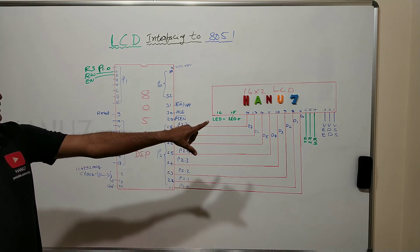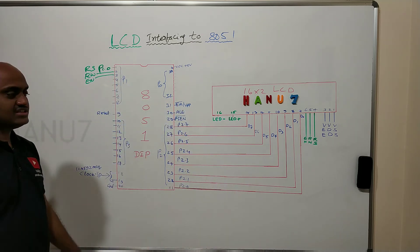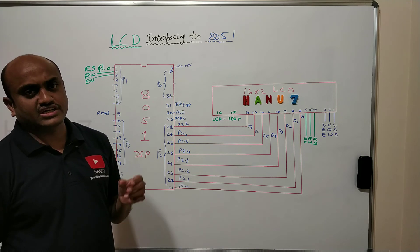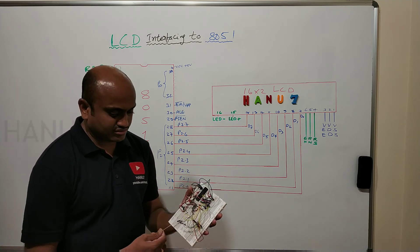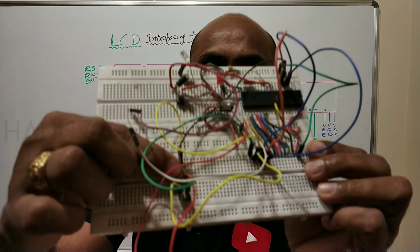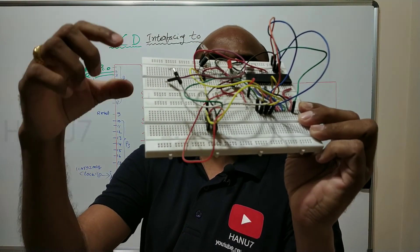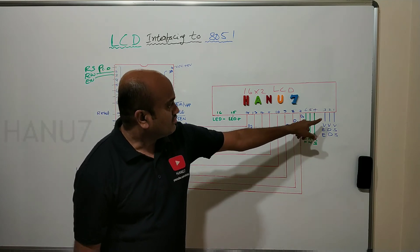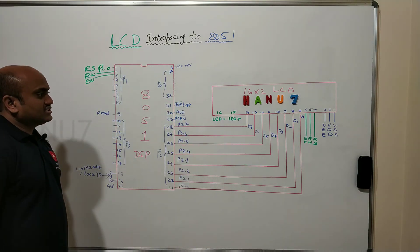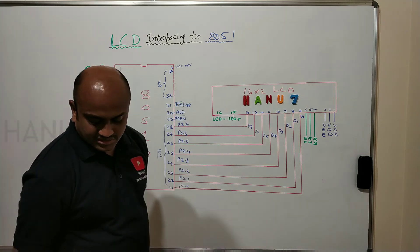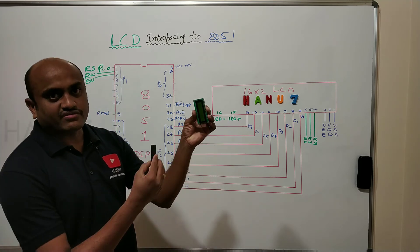As you can see, there is a 10k potentiometer in the circuit. To that 10k pot we connect three wires, and those three wires go to pins 1, 2, and 3 of the LCD. So like this you can interface an LCD device to the 8051 microcontroller.